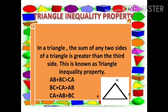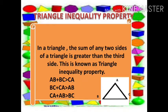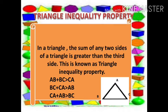Now let's see the triangle inequality property. In a triangle, the sum of any two sides of a triangle is greater than the third side. This is known as the triangle inequality property. That is: AB + BC > CA, BC + CA > AB, and CA + AB > BC.